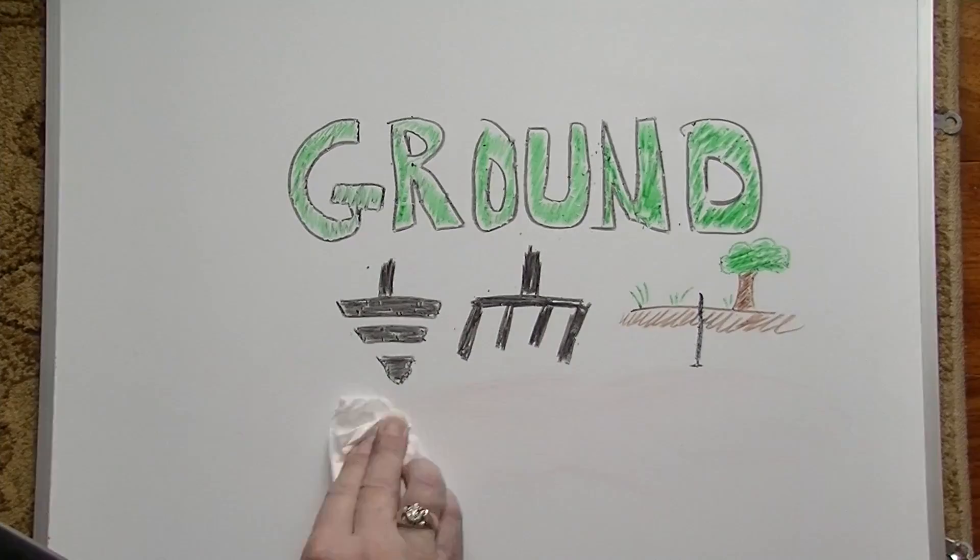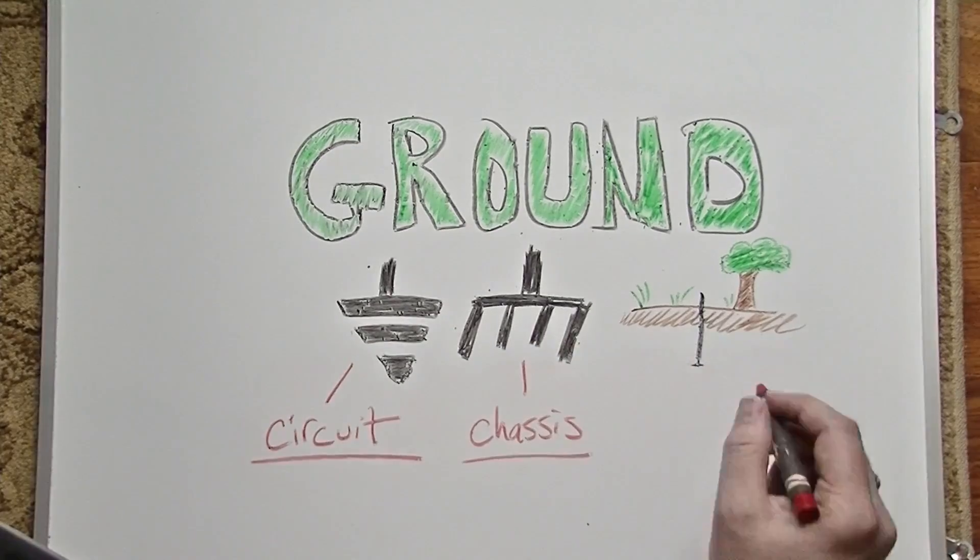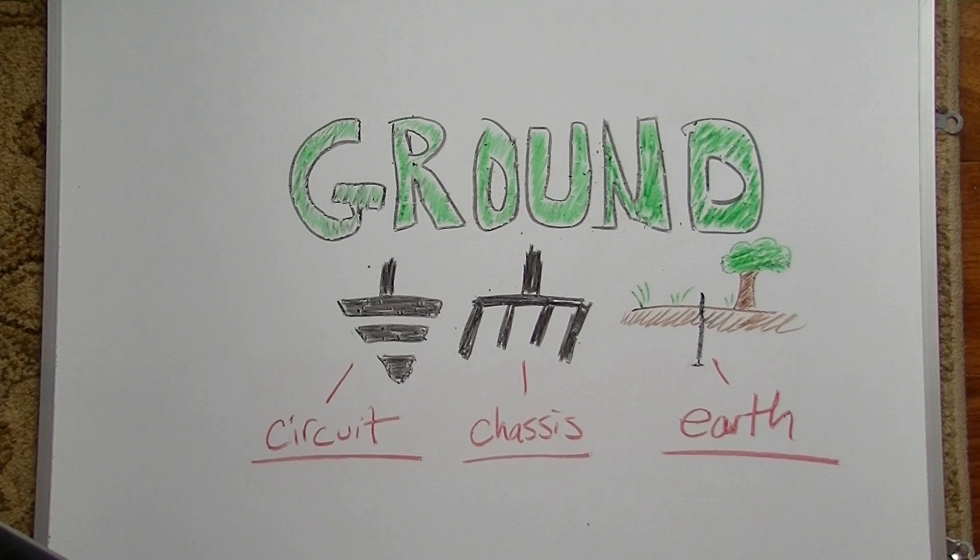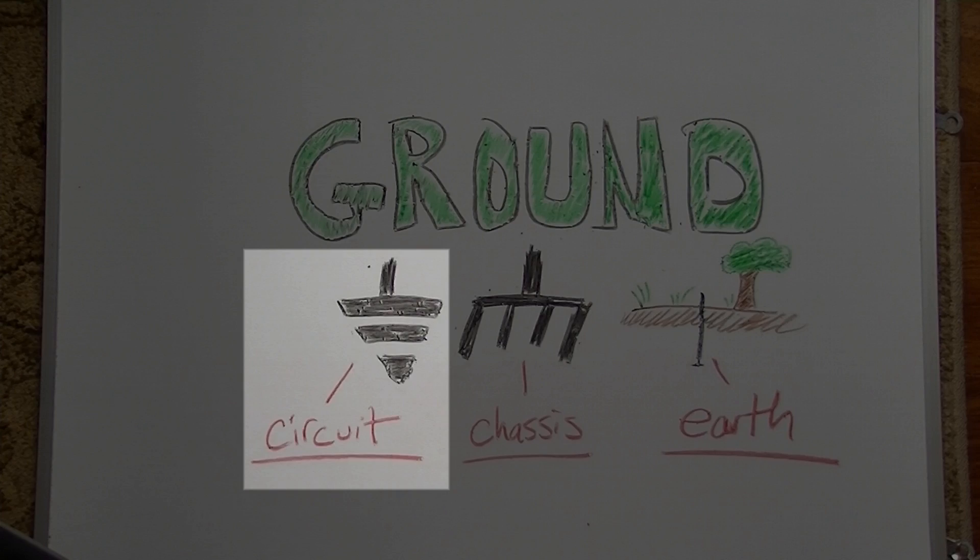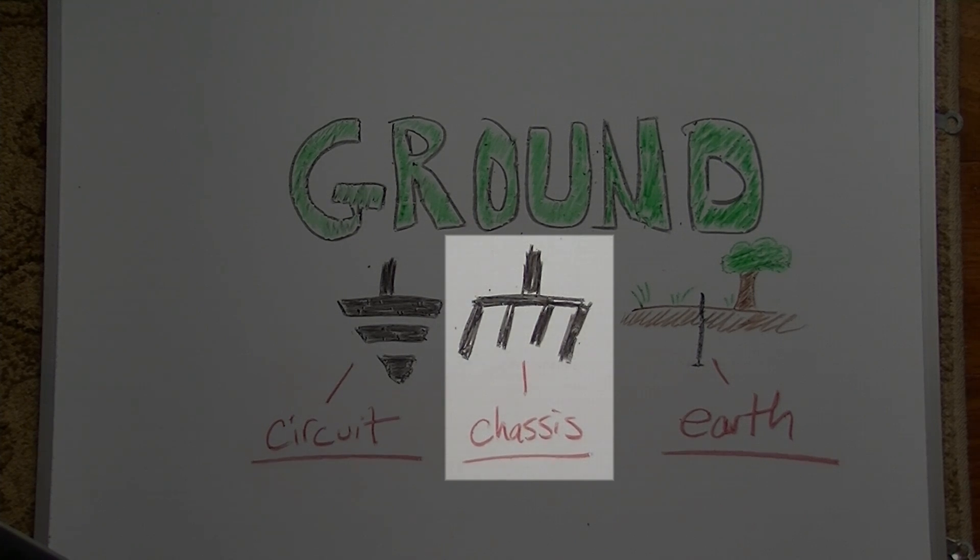First, let's talk about what exactly we mean by ground. The term 'ground' is often conflated to mean circuit ground, chassis ground, or earth ground, but these are not the same thing. Circuit ground is best thought of as a zero reference point for potential energy or voltage inside an electrical circuit. This circuit ground is usually attached to the chassis ground at one point or several points in a star configuration.